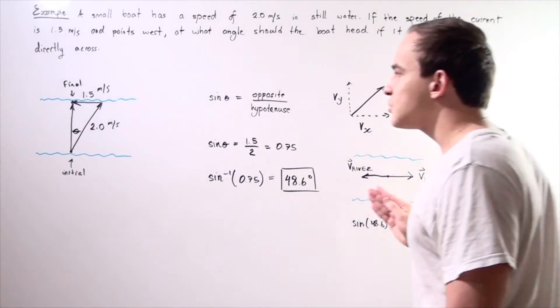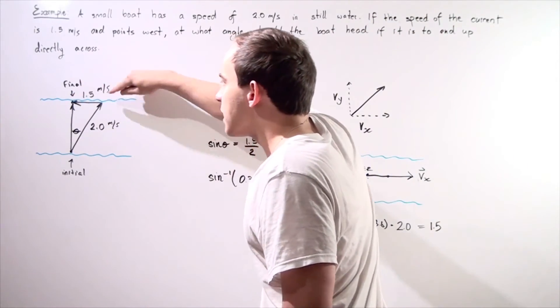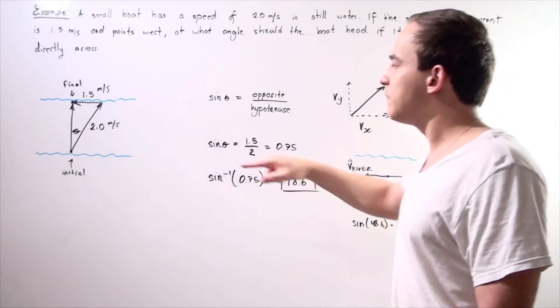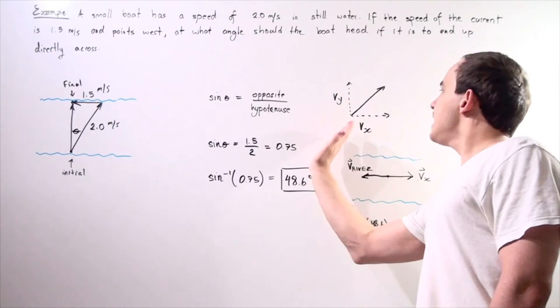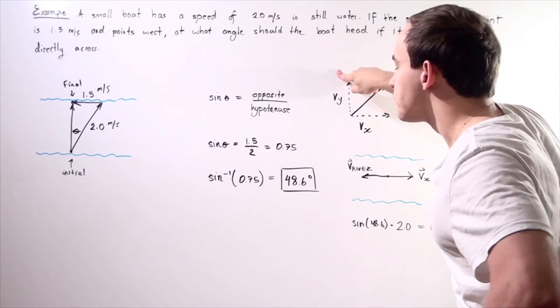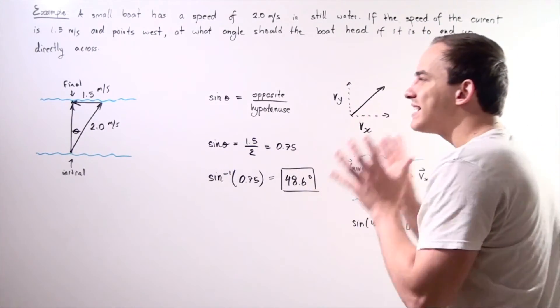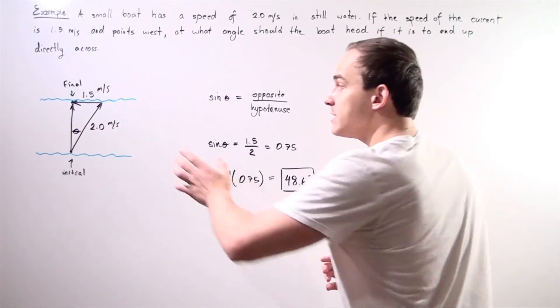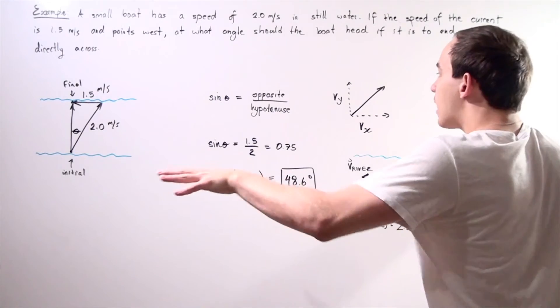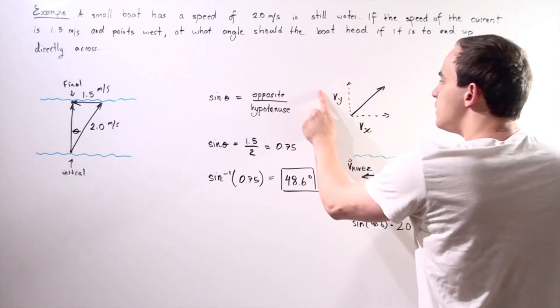So once again, what is actually going on? We have this vector that is due to the river, to the current of the river, and our actual vector of the boat points in this direction. We have an x component and a y component. We want this x component to exactly offset this current component so that they cancel out and our boat heads directly upward according to this vy component.